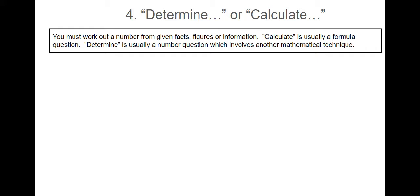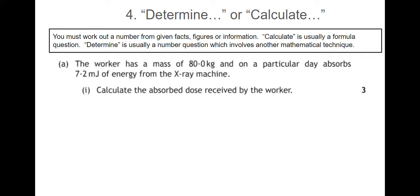Number four, determine or calculate. These are number questions and in these questions you need to work out a number from given facts, figures or information. Calculate questions usually need you to use one of the formulas from the formula sheet. A determined question usually needs you to work out a number using some other sort of mathematical technique. So for example, a worker has a mass of 80 kilograms and on a particular day absorbs 7.2 millijoules of energy from the x-ray machine. Calculate the absorbed dose received by the worker. So these are worth three marks traditionally. This is what we call a standard three mark question, and you might want to have a look at another video I've posted about standard three markers. But anyway, we get the mark for writing the correct formula, inserting the numbers correctly into the formula, and then giving a correct answer complete with its units.